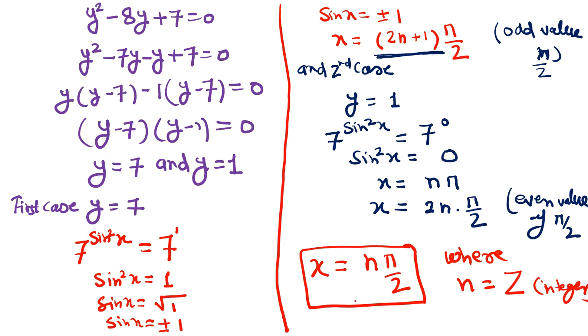So this is the solution to the problem. The complete solution is x = nπ and x = (2n+1)π/2. This was a very good question and I hope I have simply solved it in front of you. This is your answer.